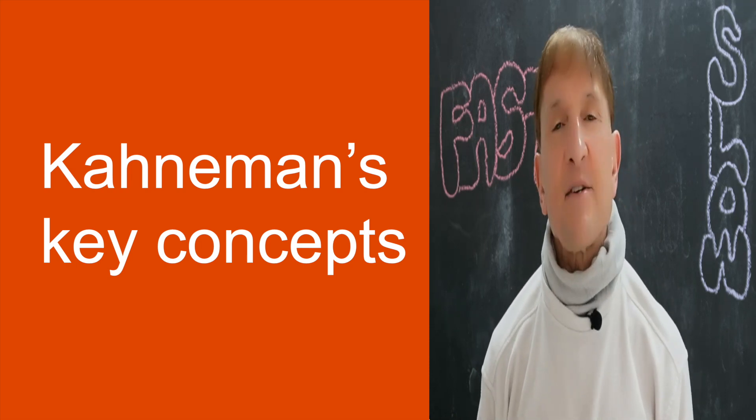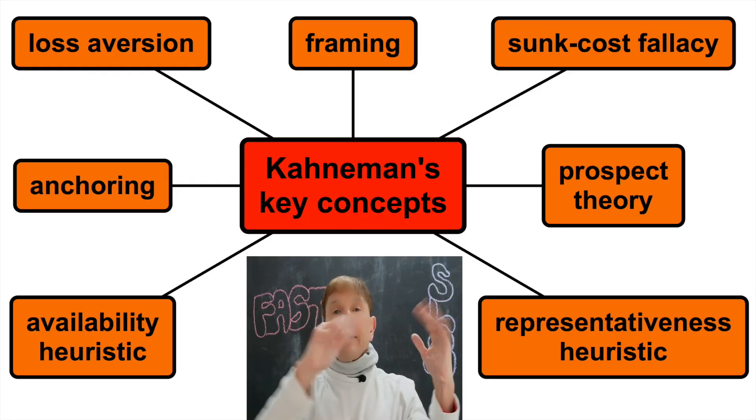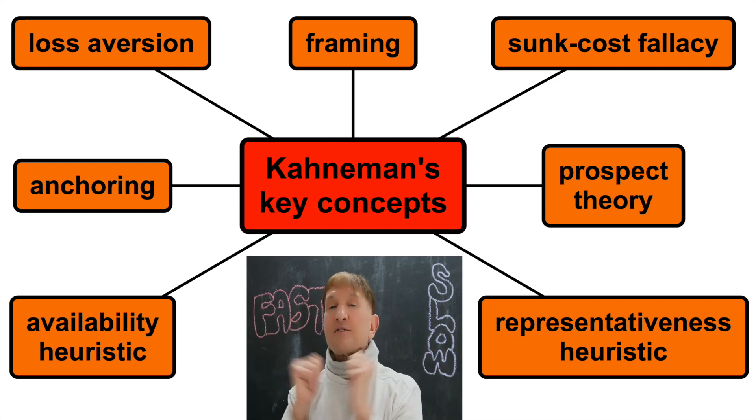Kahneman's key concepts are as follows: framing, loss aversion, sunk cost fallacy, prospect theory, representativeness heuristic, availability heuristic, anchoring. Seven concepts that he ties together.